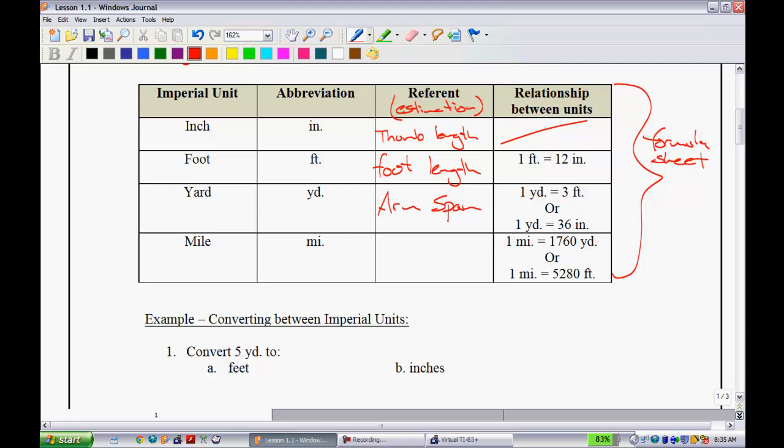The last one, a mile. This one is actually really kind of tough. The reference says for one mile, it's the distance walked in 20 minutes. Obviously that's kind of vague, but that just gives you an idea of how to estimate it. The conversion that I've given here is one mile is equal to 1,760 yards, or 5,280 feet.